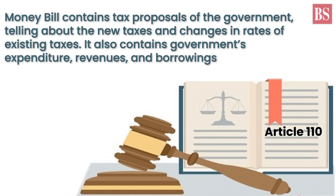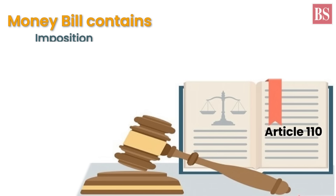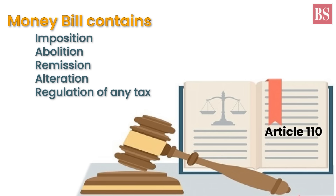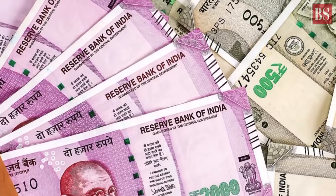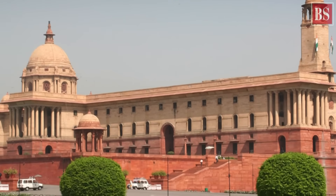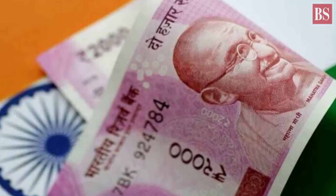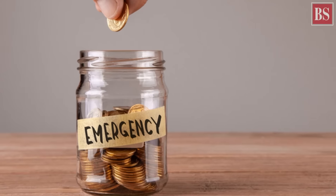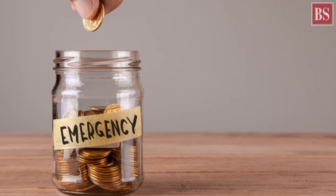According to the Constitution, a Money Bill contains the imposition, abolition, remission, alteration or regulation of any tax. But the imposition of local taxes doesn't come under the purview of the Money Bill. The regulation of the borrowing of money by the Union Government also comes under its ambit. The payment of monies into or the withdrawal of monies from the Consolidated Fund or the Contingency Fund of India also come under this bill.